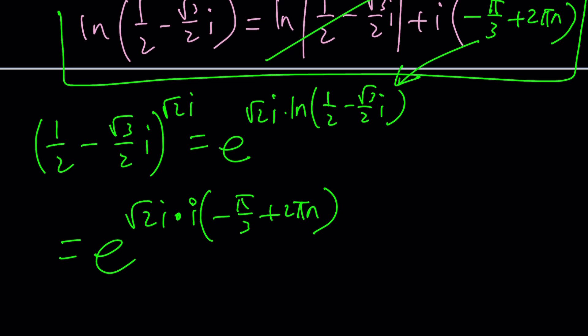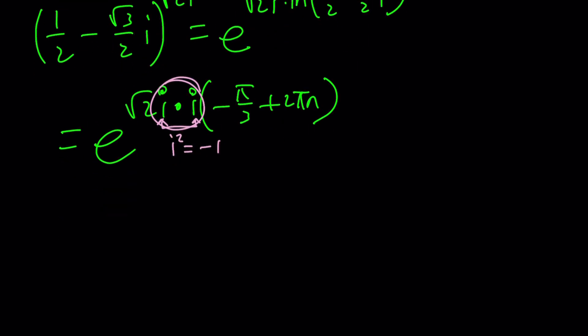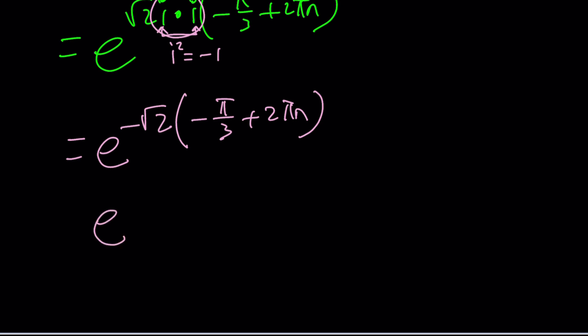Surprise! We get i times i which is i squared. One thing that you should never forget, check out the lecture videos if you're new to this, i squared is negative 1. So that gives us a negative 1, which turns into e to the power negative root 2 multiply by negative pi over 3 plus 2 pi n. If you distribute the negative you're gonna get e to the power root 2 pi over 3 minus 2 root 2 pi n.